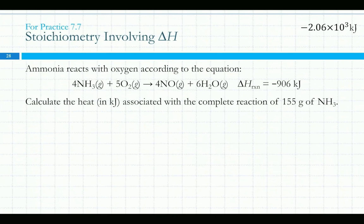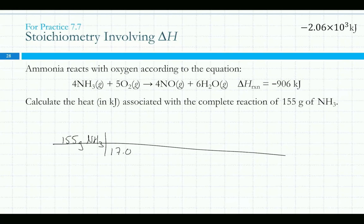For a different, more complicated chemical reaction, the same idea applies. These numbers of moles of compounds are related to this number of joules being produced. If I have 155 grams of NH₃, I convert it to moles using the molar mass of 17.04 g/mol, apply the mole ratio, and then multiply by 906 kJ per mole to get the heat. The stoichiometric coefficients connect all the reactants and products to the enthalpy change.